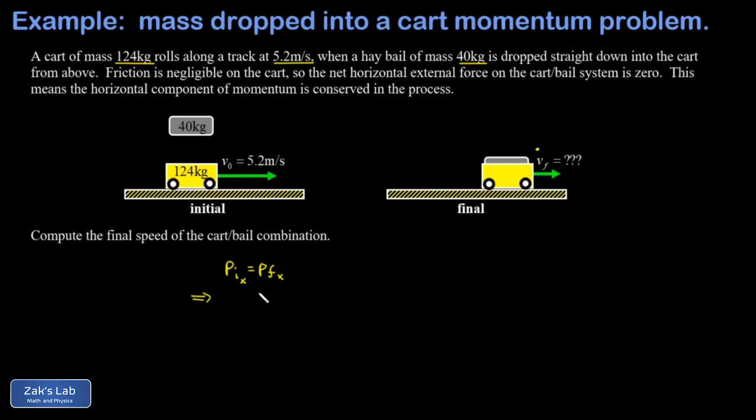In my initial state, the only x momentum that I have is from the cart itself, and that has a mass of 124 kilograms and a speed of 5.2 meters per second. In the final state, they're moving together at a common final velocity, so the hay bale plus the cart, that's 164 kilograms, times my final speed.